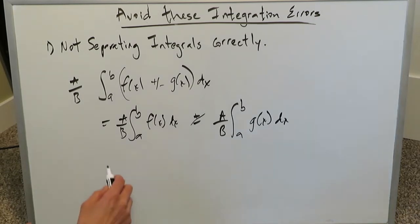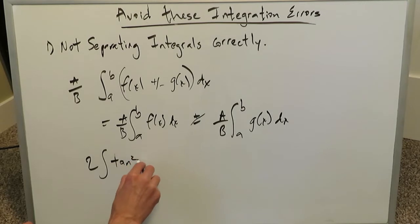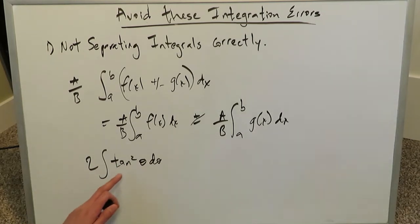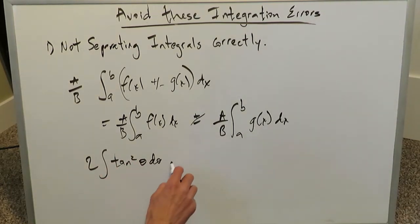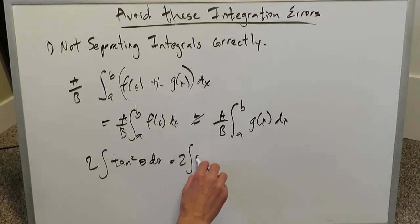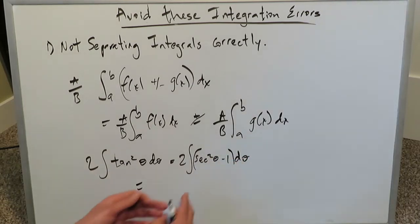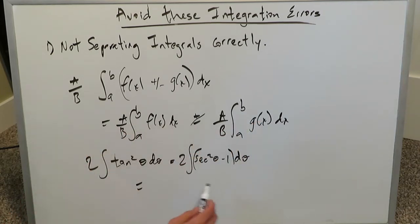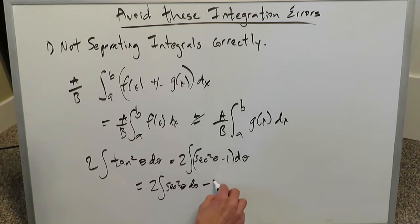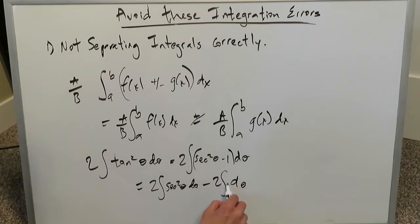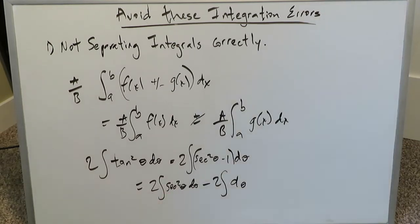An example: integrate 2 tan²θ dθ as an indefinite integral. This is not easy to integrate directly — you use the trigonometric identity and think of it as 2(sec²θ − 1) dθ. When you separate this out, you cannot forget to distribute properly. The separated integral expression is 2∫sec²θ dθ minus 2∫dθ, because the 2 applies distributively to all items. You have to properly separate and distribute everything — the coefficients and your integrands.